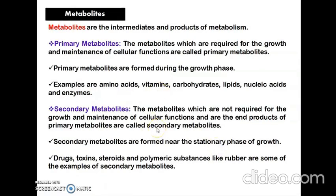Metabolites are intermediates and products of metabolism — products produced by microorganisms in the process of their metabolic activities. There are two types: primary metabolites and secondary metabolites. Primary metabolites are produced by organisms and are essential for their growth and maintenance, mostly produced during the log phase of the growth curve. Examples include amino acids, vitamins, carbohydrates, lipids, nucleic acids, and enzymes.